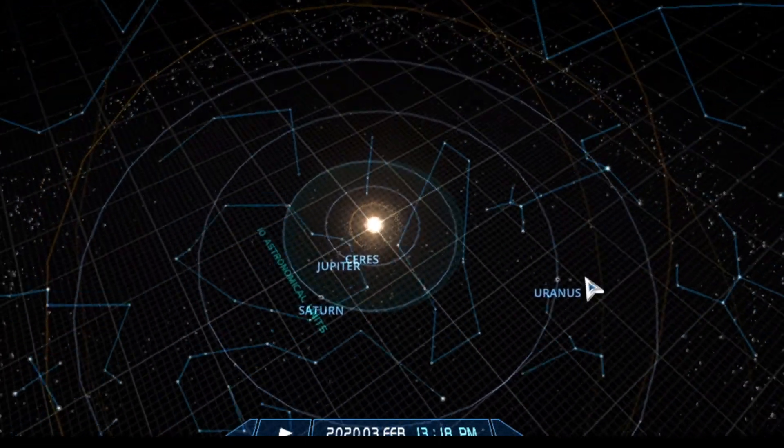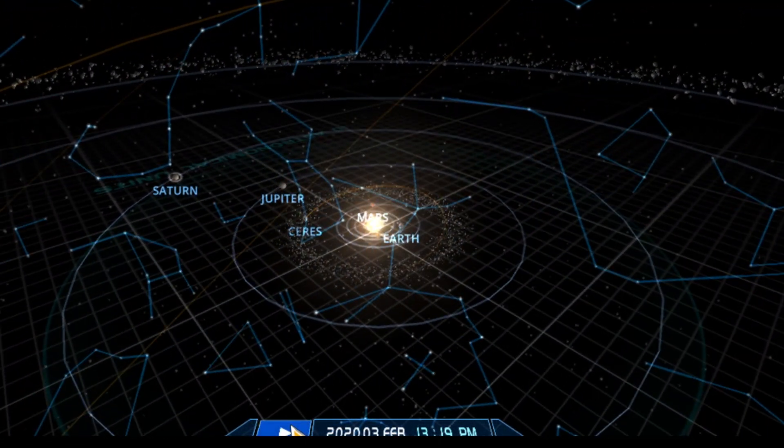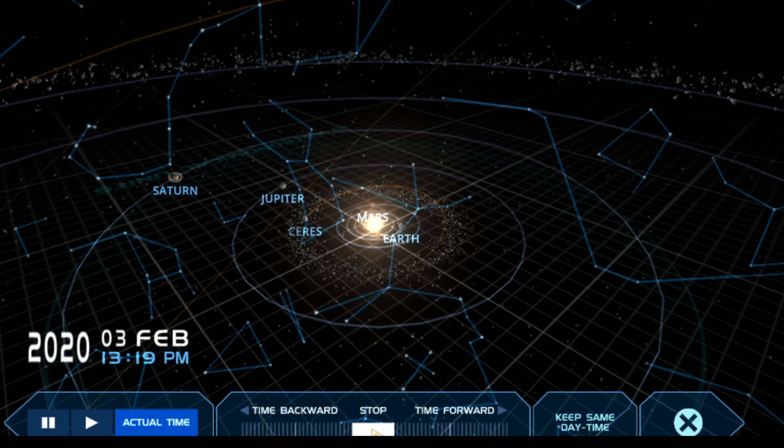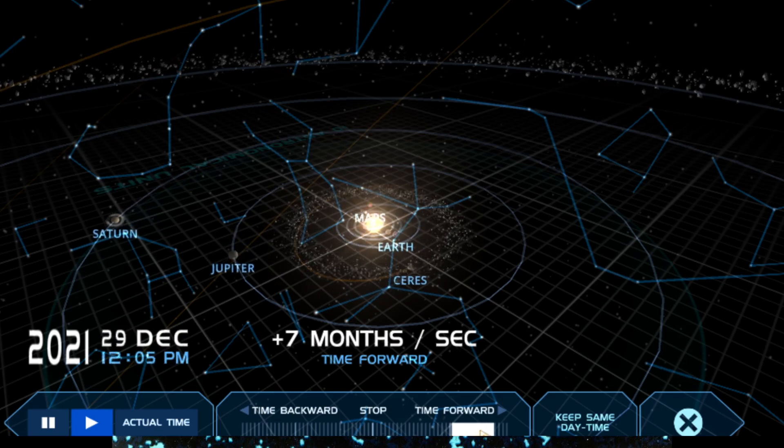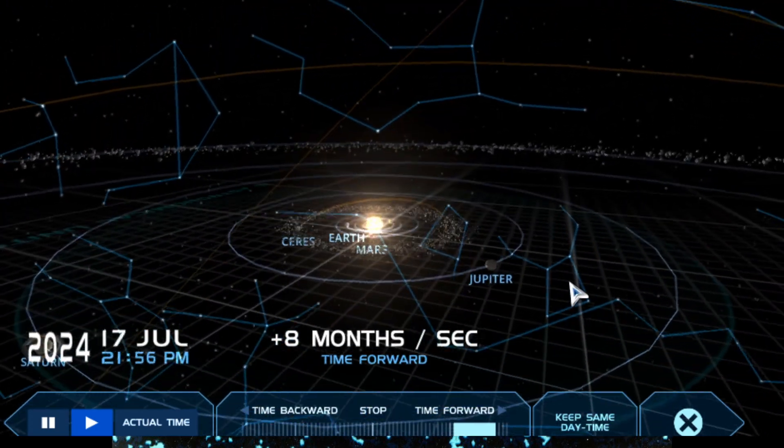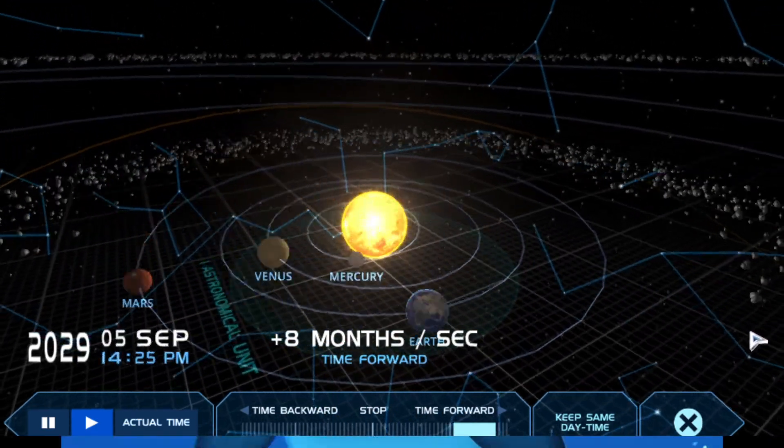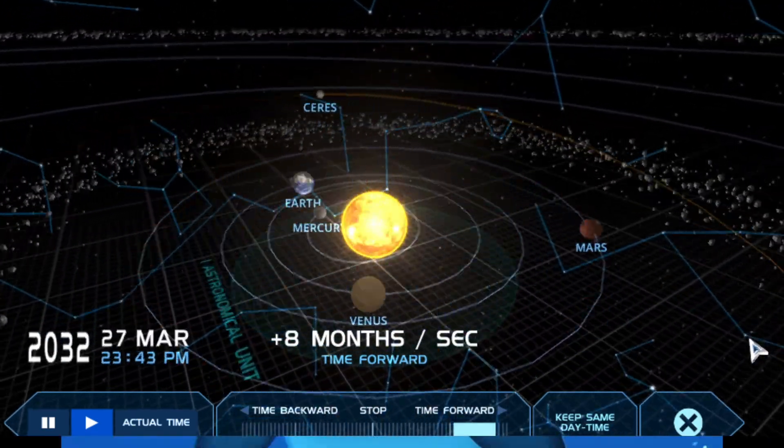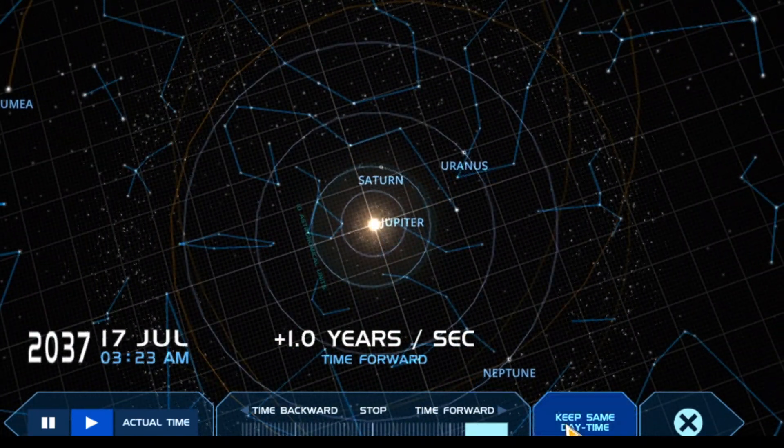Projects like Solar System Scope help us better understand this story by allowing us to explore a simple 3D model of our solar system. When we increase the speed of time, we can easily see the awesome machinery of our universe. It's remarkably predictable. Our universe presents itself in distinct patterns that we can measure using numbers. In this way, we are gradually uncovering the rulebook for our universe.